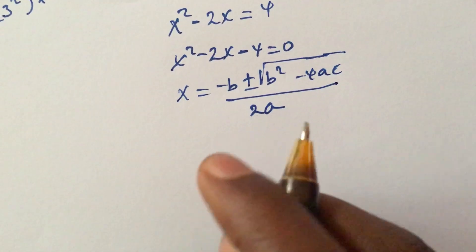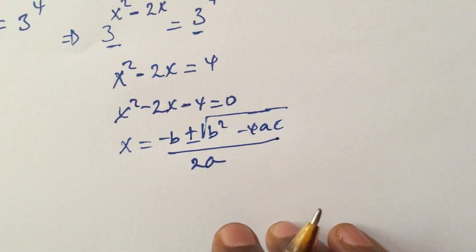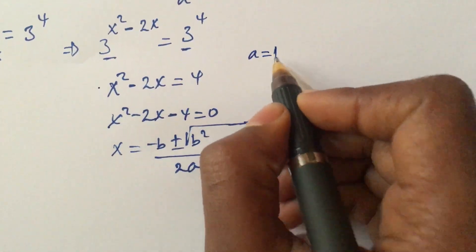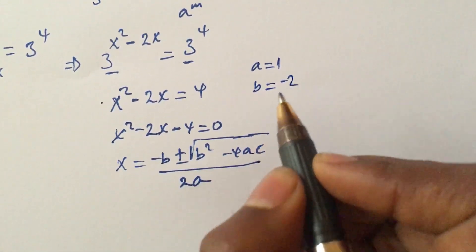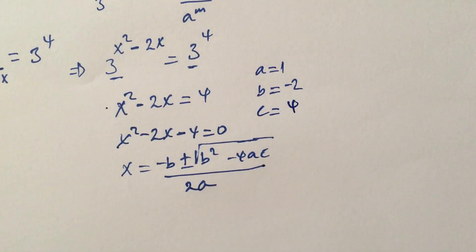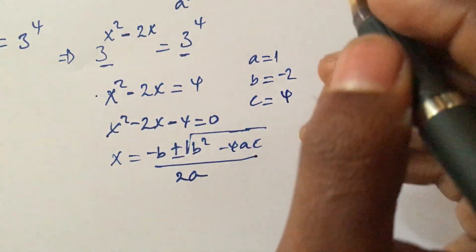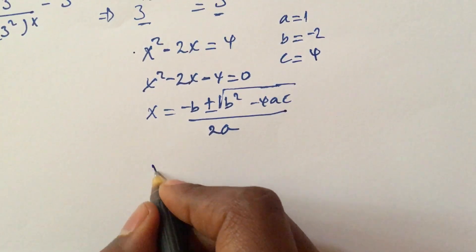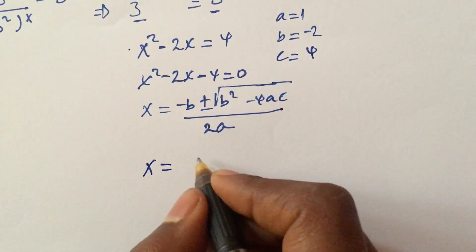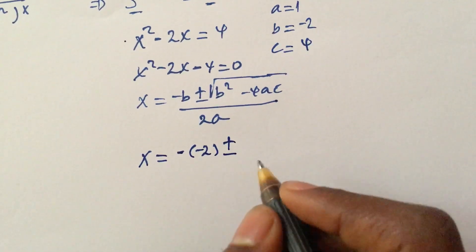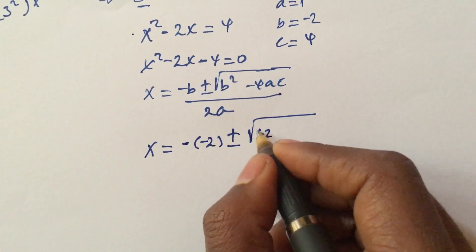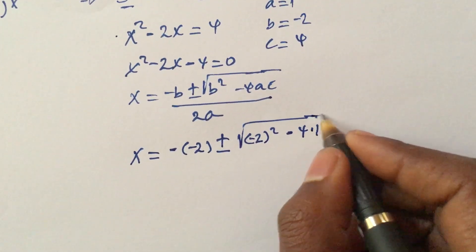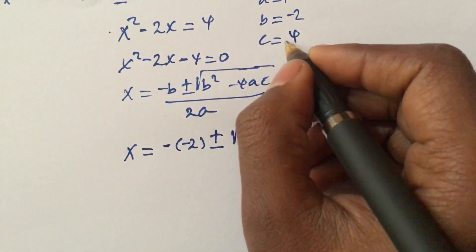Identifying the coefficients: a equals 1, b equals negative 2, c equals negative 4. Substituting into the quadratic formula: x equals negative times negative 2, plus or minus the square root of negative 2 squared minus 4 times 1 times negative 4, all over 2.